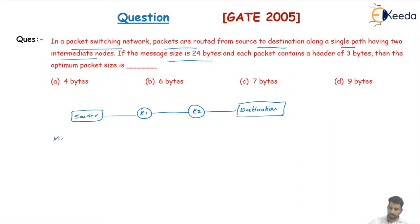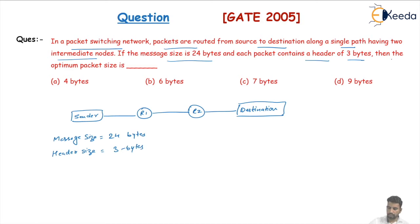If the message size is 24 bytes — the complete message size is given as 24 bytes — and the packet contains a header of three bytes, so header size is equal to three bytes, then what is the optimum packet size?